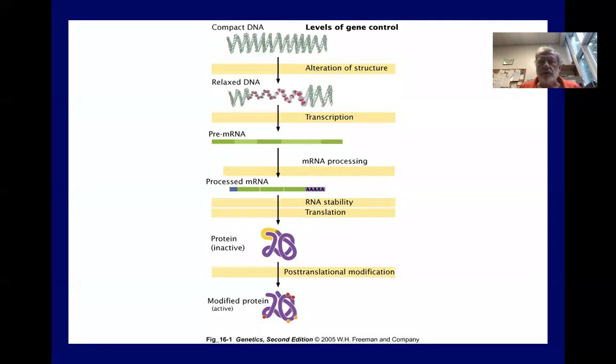This shows you various levels where genes can be, gene expression can be controlled. And the confirmation of the chromatin in transcription, which is what we'll discuss mostly in this unit.